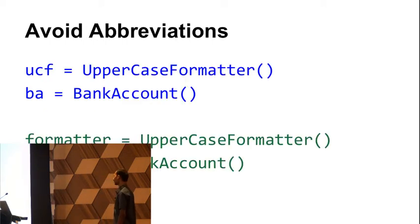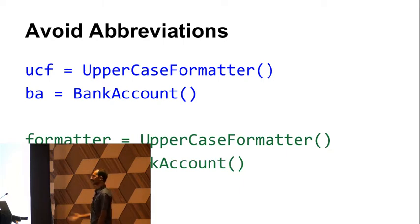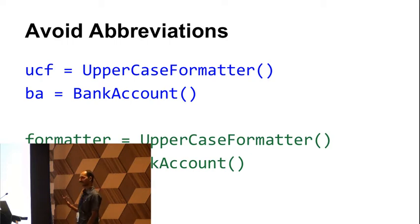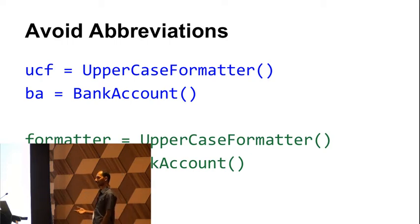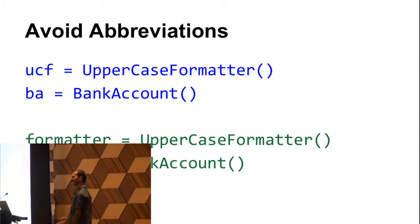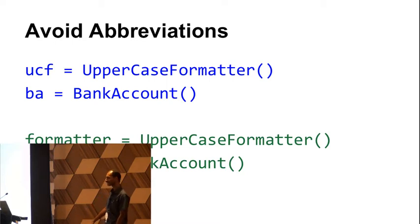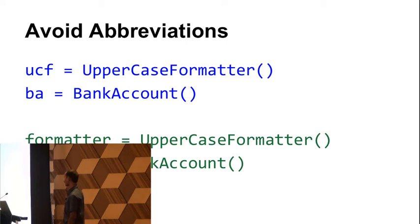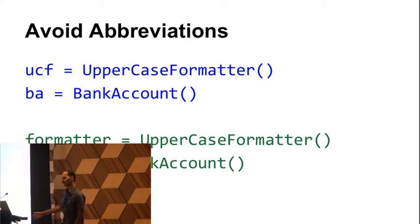First thing: avoid generic names. Don't say 'temp' or 'data' — everything is data in a computer, but what does it really signify? Also avoid abbreviations — they don't convey much. If it is HTTP, that makes sense because everyone understands HTTP, but if you say 'ba' for bank account, does that make sense? Always avoid abbreviations — call it 'formatted' or 'account' or something. Also avoid data types as names like 'some_list' — list of what? List of numbers, list of marks, list of prices? Someone looking at it should get a sense of what this thing is doing and what it is meant for.